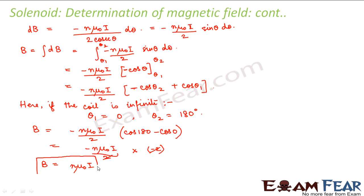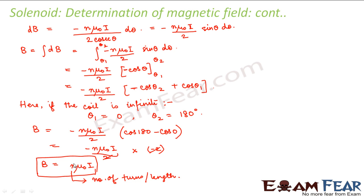Please make a note of this important point: the n here does not represent the total number of turns. This is the number of turns per unit length. Many people make the mistake of thinking that n in nμ₀i is the number of turns, but here n is not the number of turns — it is the number of turns per unit length.